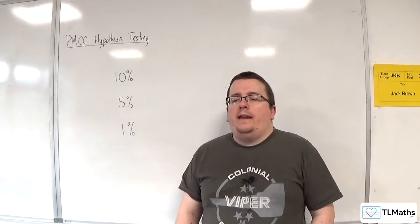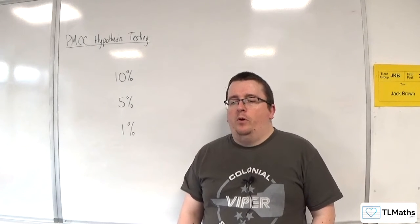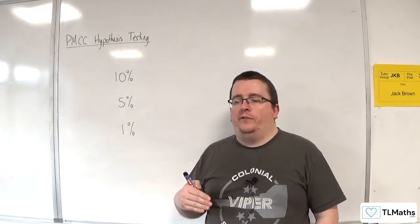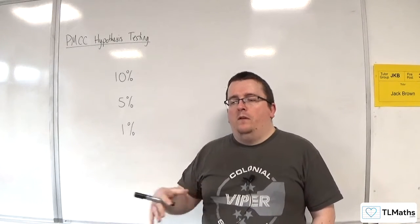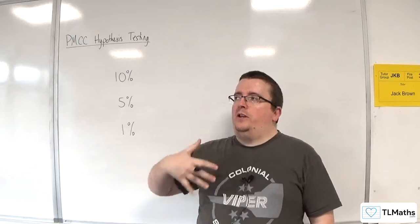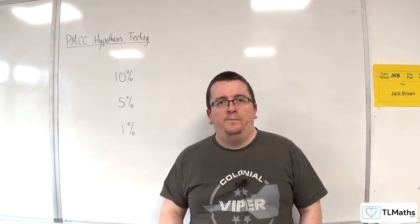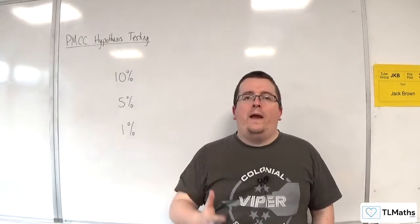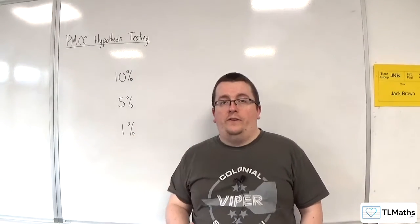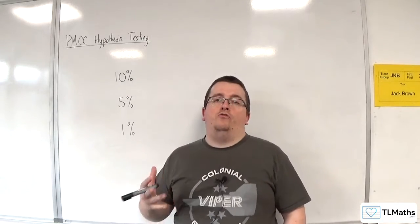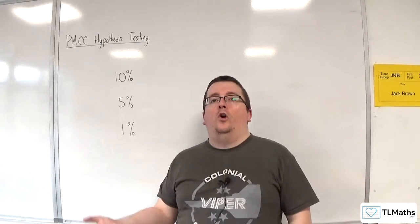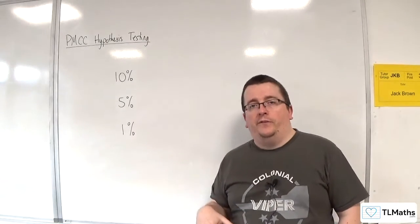Essentially, it is a value that we put onto a hypothesis test where we want to essentially say, this is going to be the cutoff. This is the cutoff for where I am going to be convinced as to whether I should reject the null hypothesis or fail to reject the null hypothesis.